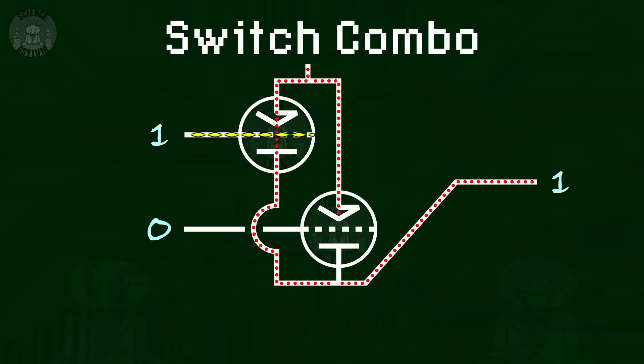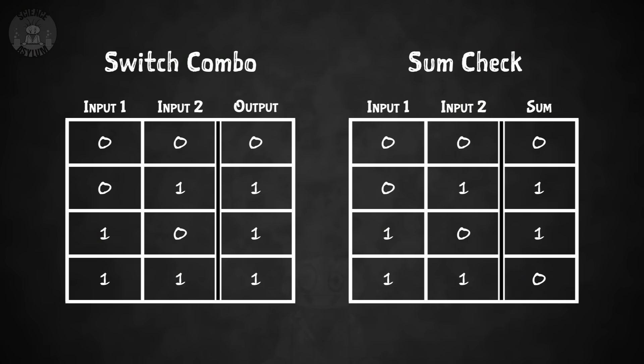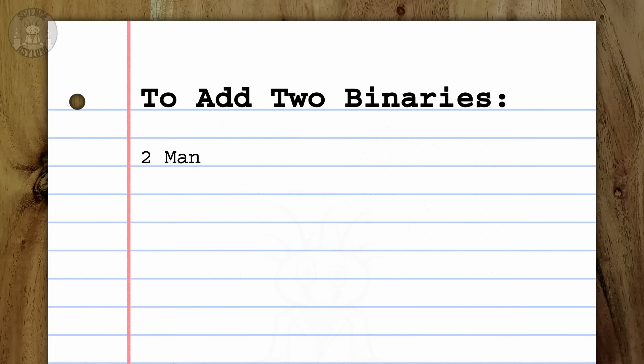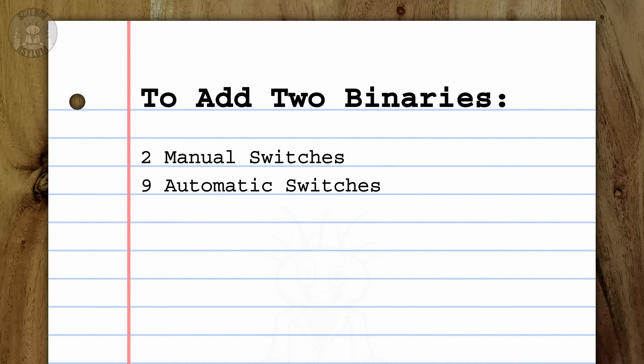Can't you just put two tubes in parallel instead of in series? That doesn't quite get us there — that'll give us a 1 if either tube is on, which also includes when both tubes are on. The truth table isn't quite correct; it's off in a single case, and fixing that one case requires five additional tubes. So just to add two single digit numbers together, we need two manual switches for the inputs, nine automatic switches for the calculation, and two lights to read the output. And frankly, computer scientists don't want to think about all those switches — which is why they abstract these sets of automated switches into logic gates.